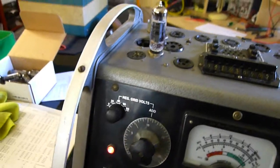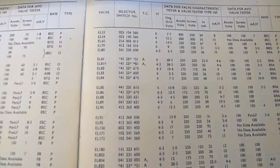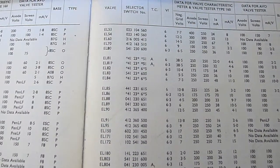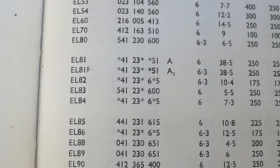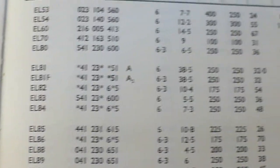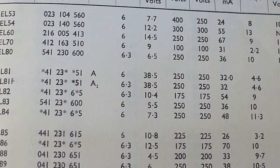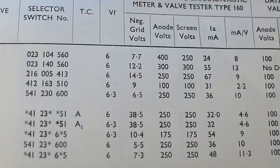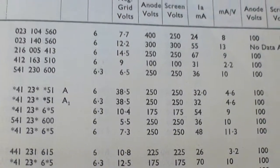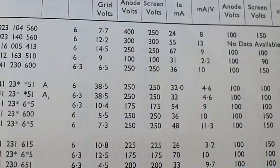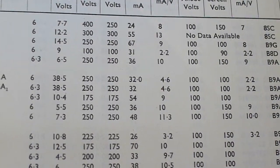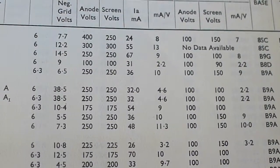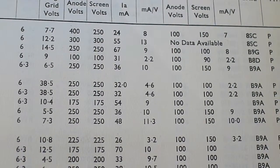We set the controls by checking with the Ava book for the EL84. You can see that we've got to set the rollers there. Standard 6 volts for the heater, 7.3 grid voltage volts, a nominal 250 volts on the screen and anode. And then it should give 48 milliamps. And the milliamps per volt should be 11.3.